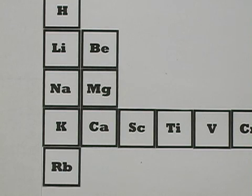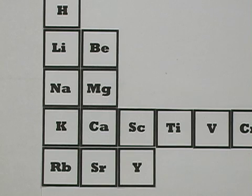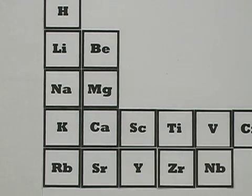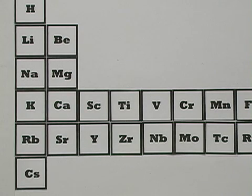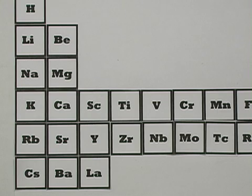With rubidium, it's back over here, because it has chemical properties similar to potassium. Then strontium, beneath calcium, yttrium, like scandium, and so on, all the way across to xenon. Then, it's back over here for cesium, like rubidium. Then barium, then lanthanum.